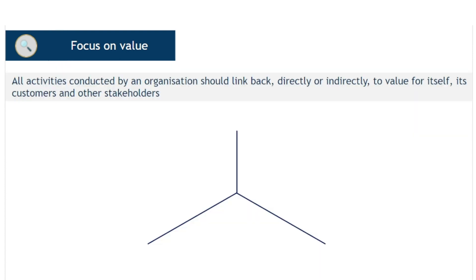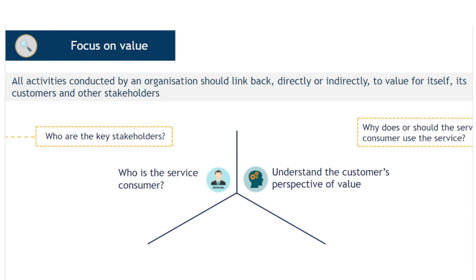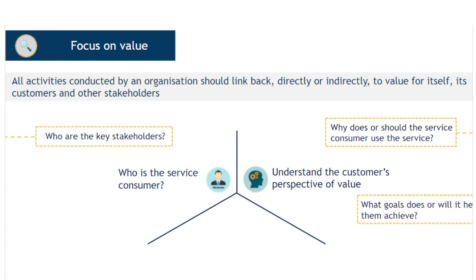An organisation must ensure that there is value in everything they currently do, or propose to do, or improve. This means understanding what the value is and who receives it. In each situation, the first step when focusing on value is to answer the question: Who is the service consumer, and who are the key stakeholders? Next, the service provider must understand how the service consumer perceives value, answering questions such as: Why does, or should, the service consumer use the service? What goals does or will it help them achieve?